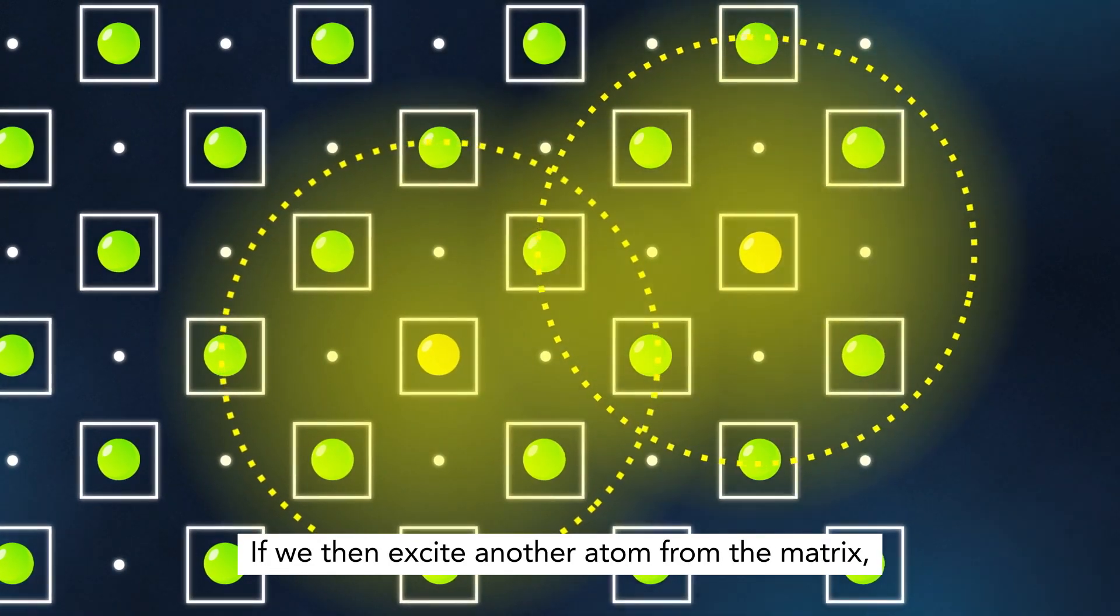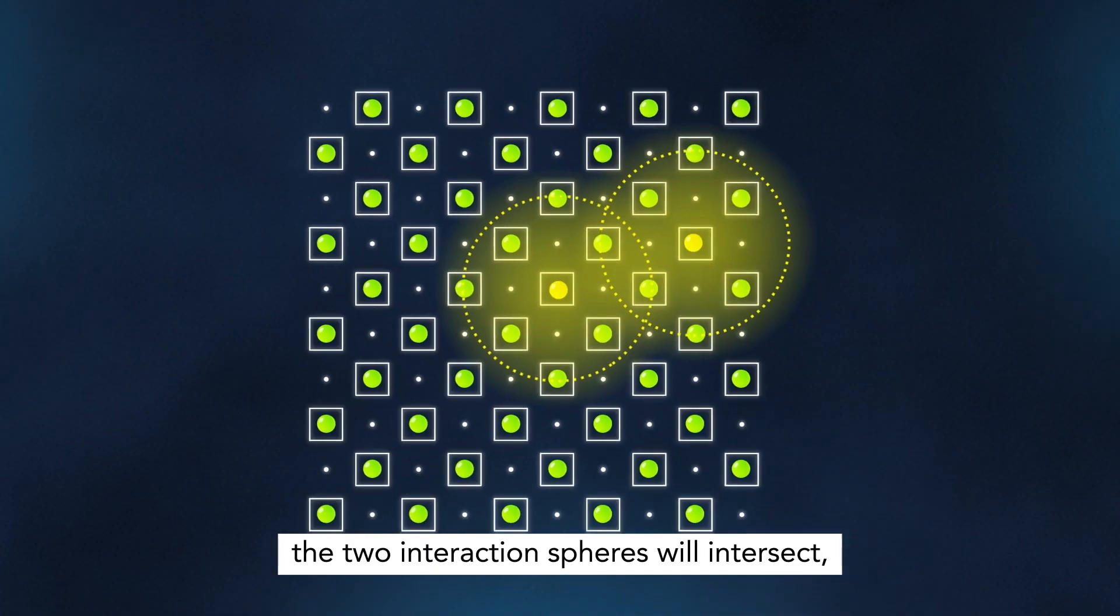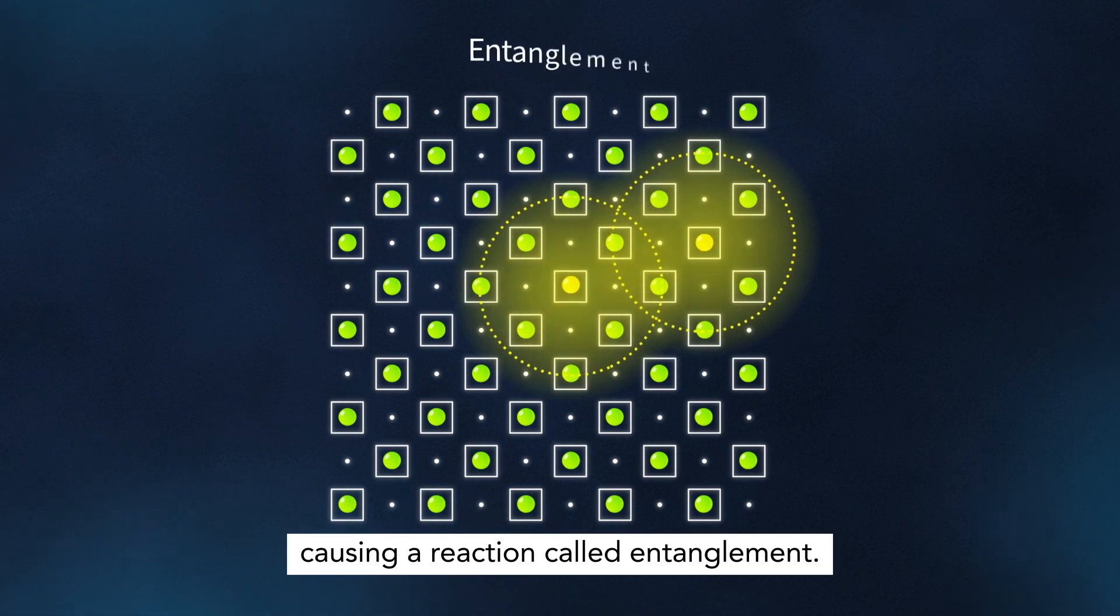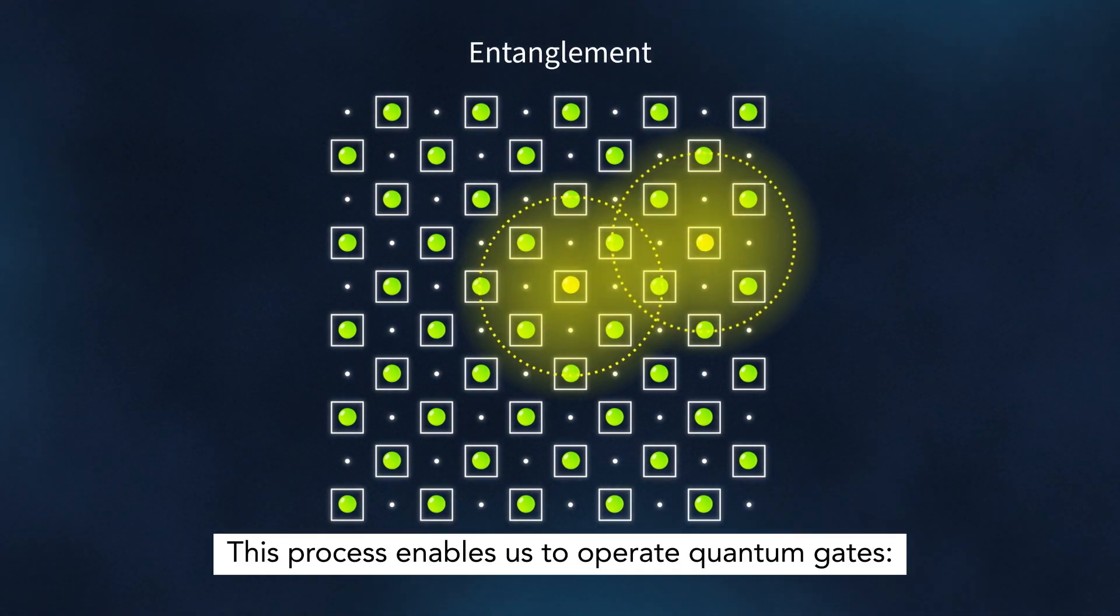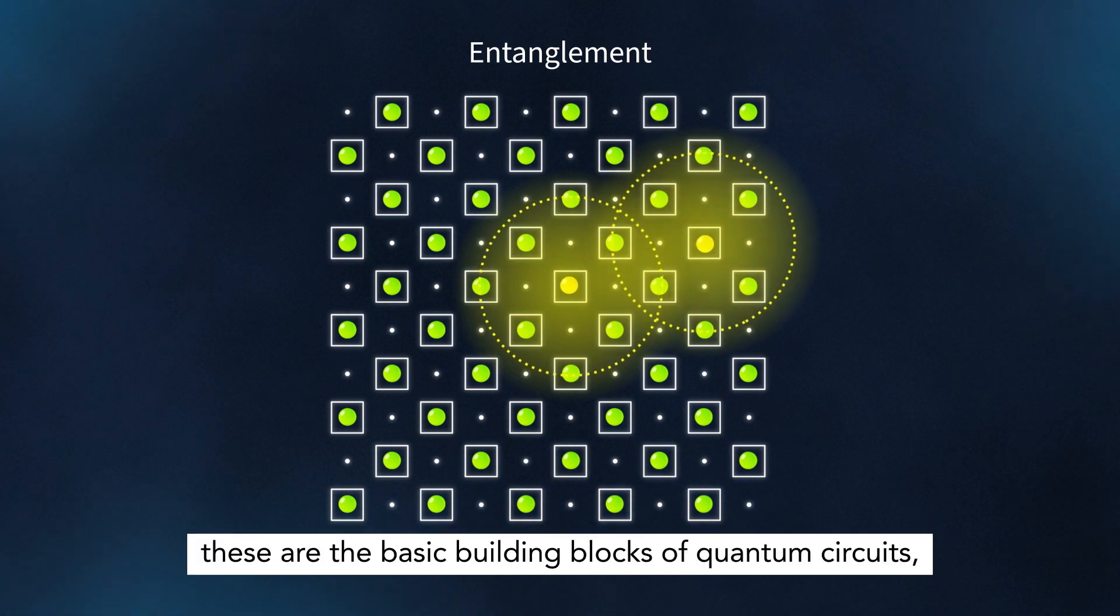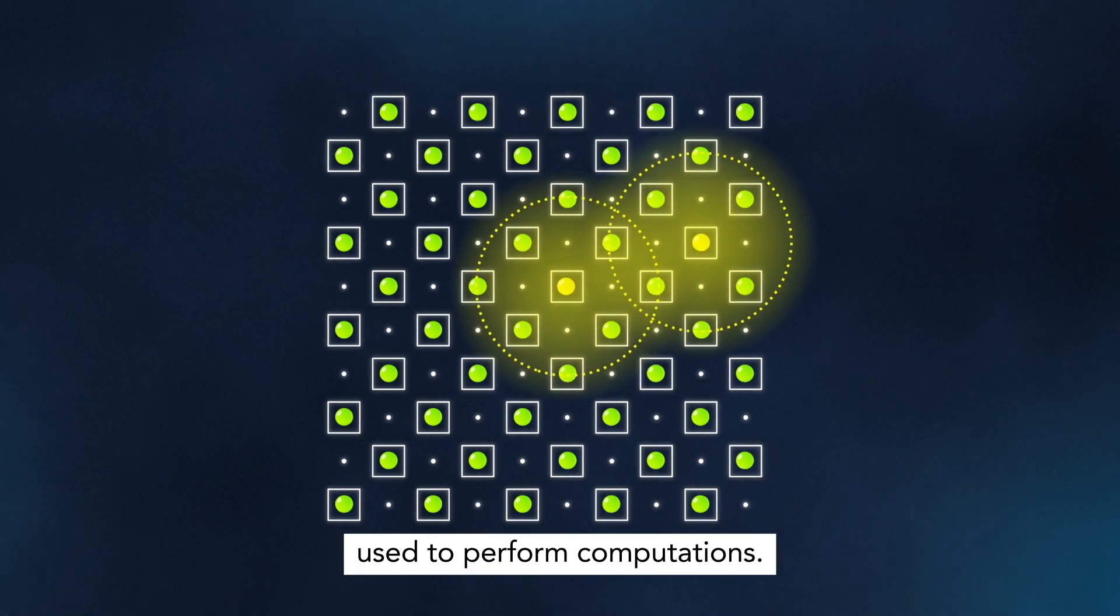If we then excite another atom from the matrix, the two interaction spheres will intersect, causing a reaction called entanglement. This process enables us to operate quantum gates. These are the basic building blocks of quantum circuits, used to perform computations.